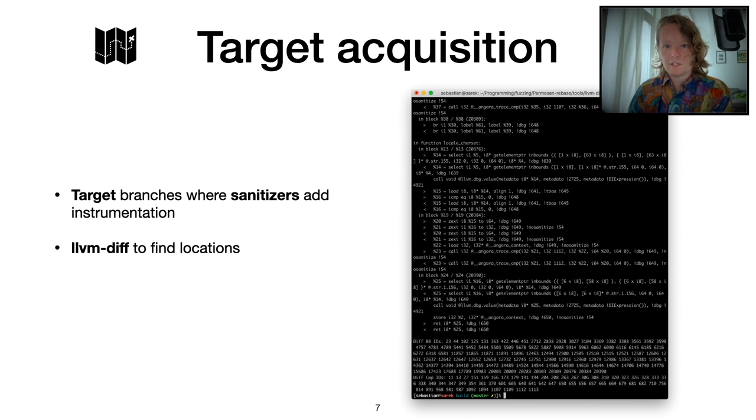How do we find these things? Well, luckily, that's fairly simple. You take an existing program, you get the LLVM IR, then you take the same program, compile it with a sanitizer, and take div off the LLVM IR. And luckily, there's this LLVM div tool.